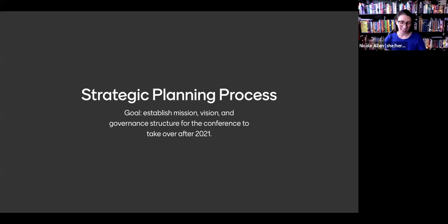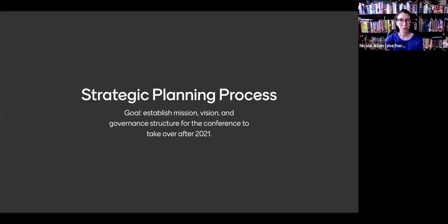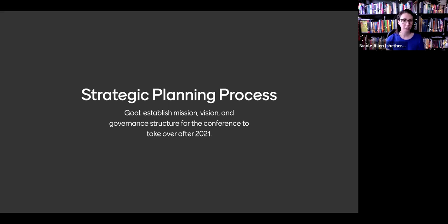The strategic planning process is developing goals, mission, vision, and governance structure to carry the conference forward. The process has spent a lot of time thinking through possibilities — the possibilities are really endless given the open education field and how much it's grown. In order to start narrowing things down to what is really the crux of the open education conference, the strategic planning committee is trying to get at what makes the open education conference what it is. We're going to ask two questions through Mentimeter — these questions are meant to be provocative.